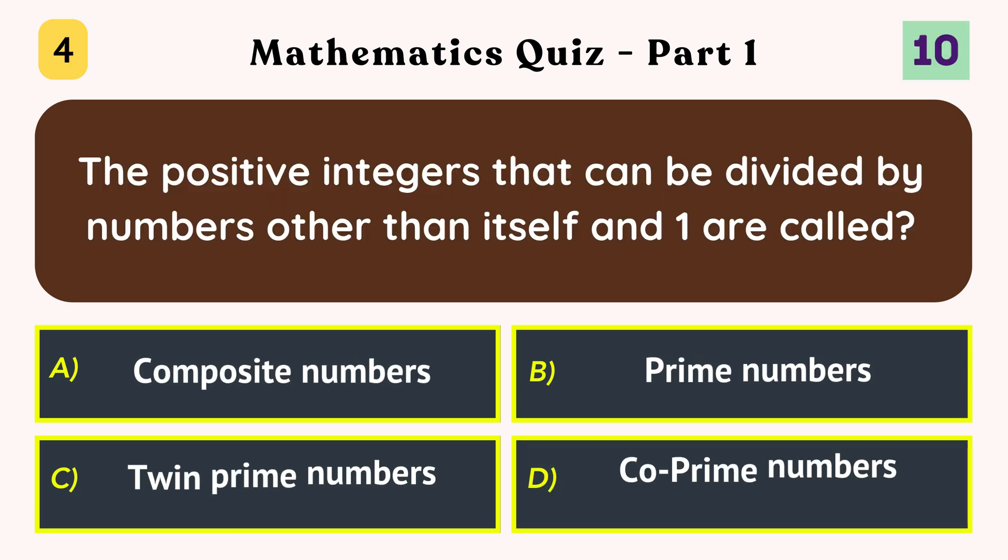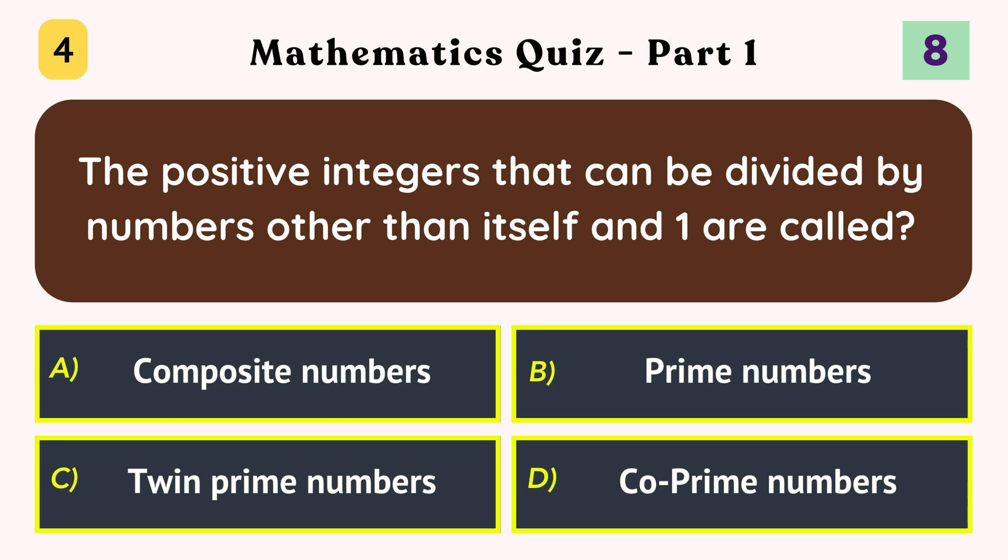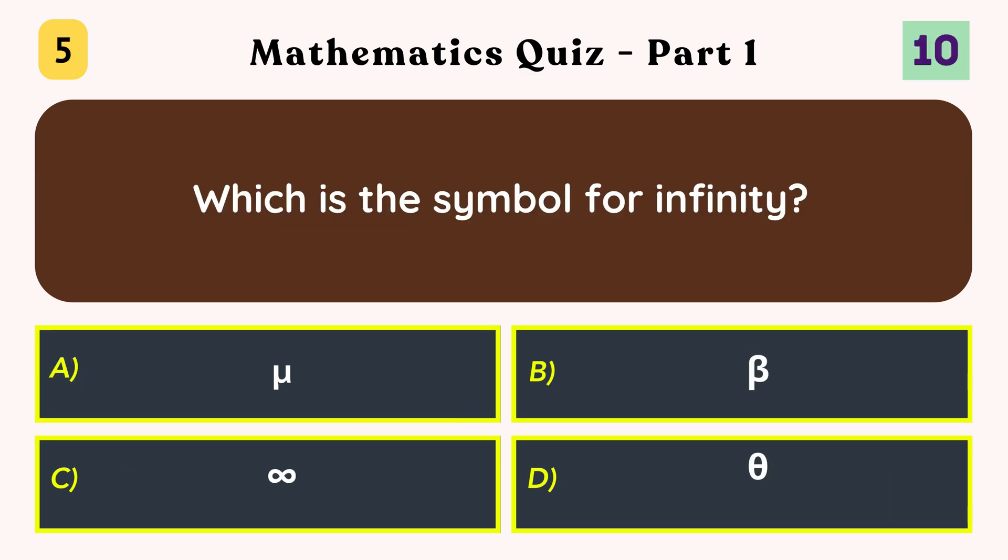The positive integers that can be divided by numbers other than itself and one are called? Composite numbers.